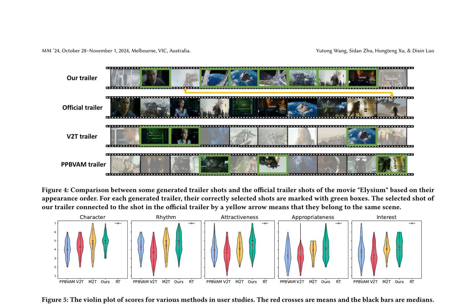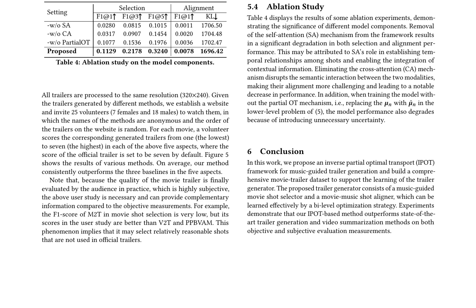The ablation study in Table 4 demonstrates the significance of different model components, including the self-attention mechanism, cross-attention mechanism, and partial optimal transport mechanism. The removal of these components results in significant degradation in both selection and alignment performance. The self-attention mechanism is crucial in establishing temporal relationships among shots and integrating contextual information, allowing the model to capture the narrative flow of the trailer. The cross-attention mechanism enables semantic interaction between the audio and visual modalities, making their alignment more challenging without it. The partial optimal transport mechanism helps to avoid introducing unnecessary uncertainty in the model, ensuring more precise alignment between the music and video components. The authors conclude that their inverse partial optimal transport framework outperforms state-of-the-art trailer generation and video summarization methods on both objective and subjective evaluation measurements.